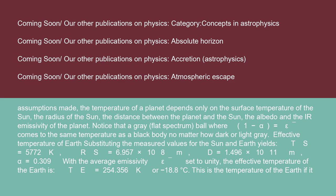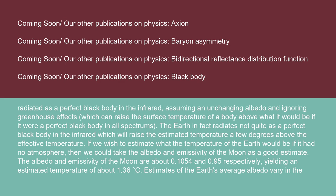This is the temperature of the Earth if it radiated as a perfect black body in the infrared, assuming an unchanging albedo and ignoring greenhouse effects, which can raise the surface temperature of a body above what it would be if it were a perfect black body in all spectrums. The Earth, in fact, radiates not quite as a perfect black body in the infrared, which will raise the estimated temperature a few degrees above the effective temperature.